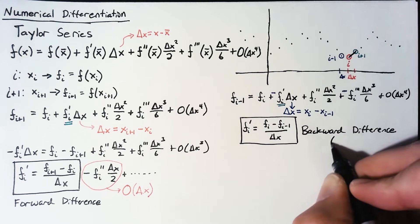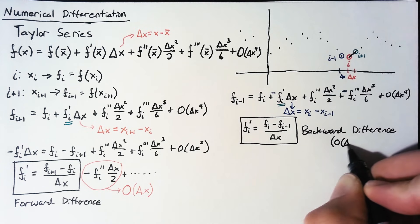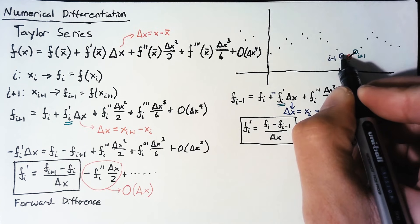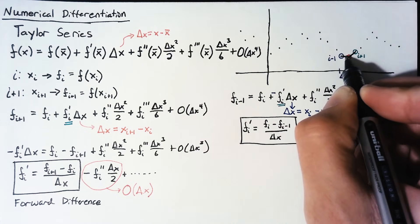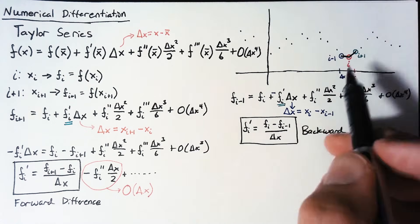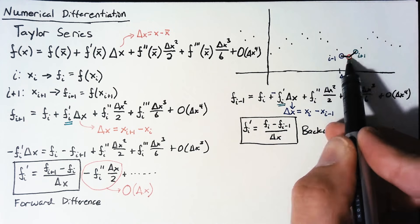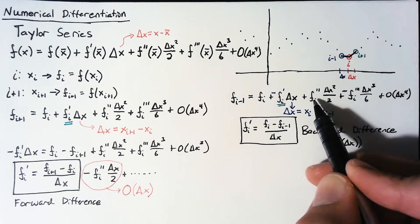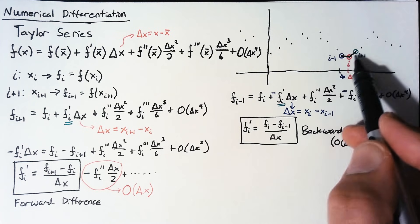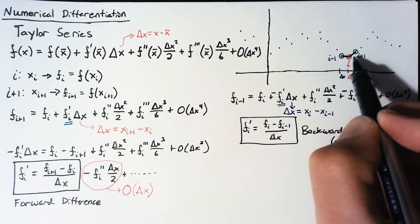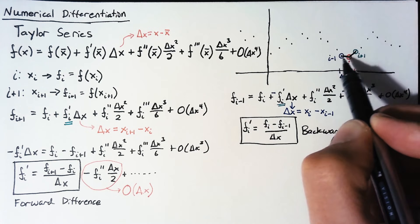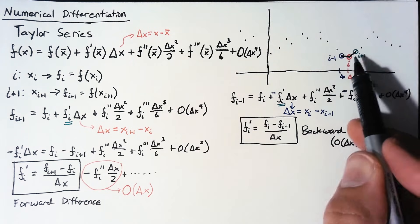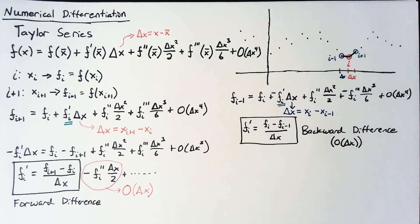And once again, this had an error of an order of delta x. So, this derivative that we calculate is just using these two points to calculate the slope. So, we get a different answer from this, but remember that our error here is based on the second derivative, the curvature of this line. So, if we have high curvature, as we do in these couple of points, then we're going to have a higher difference between these two values.